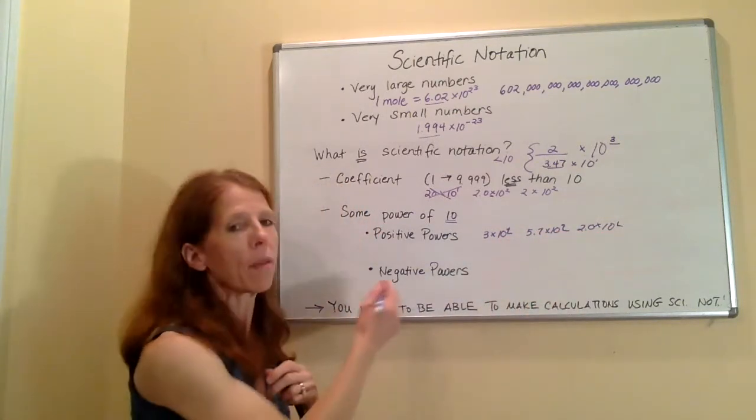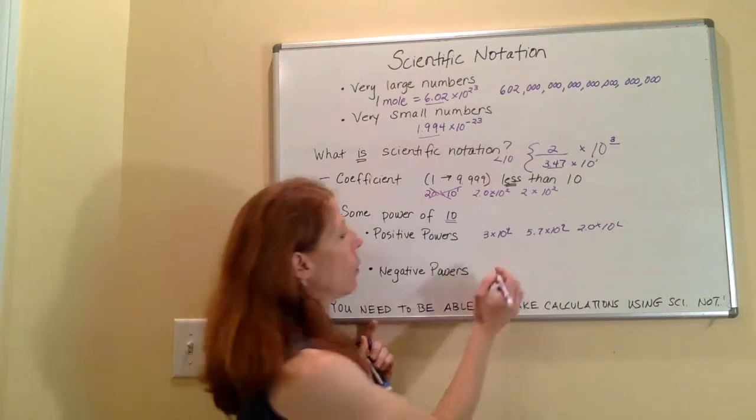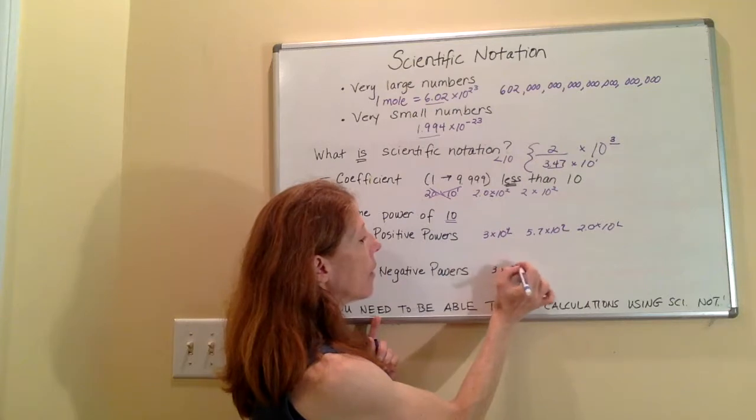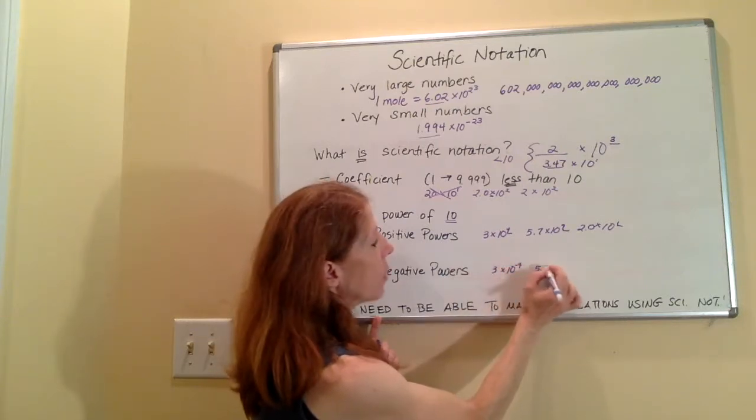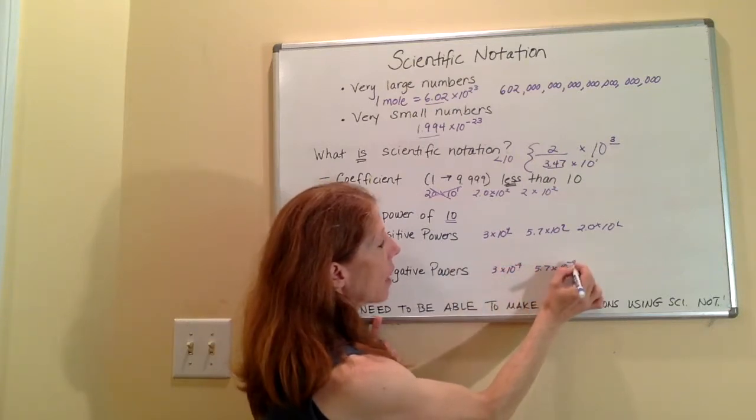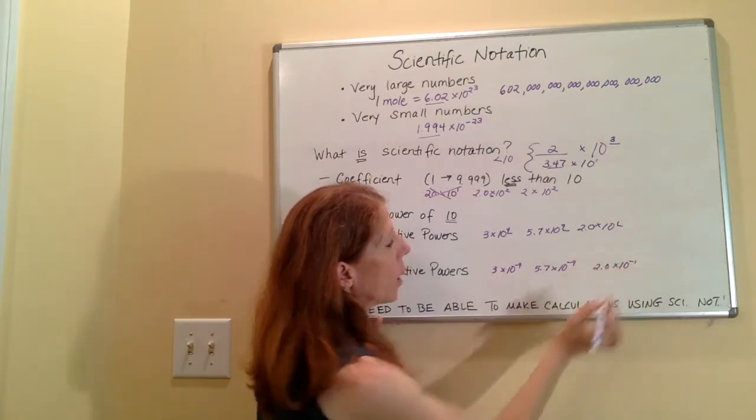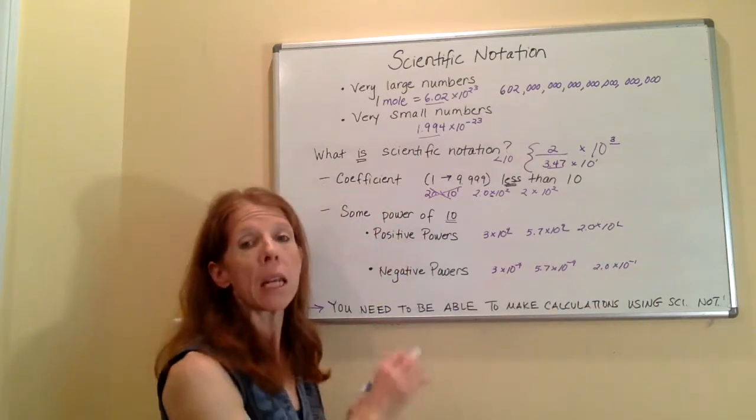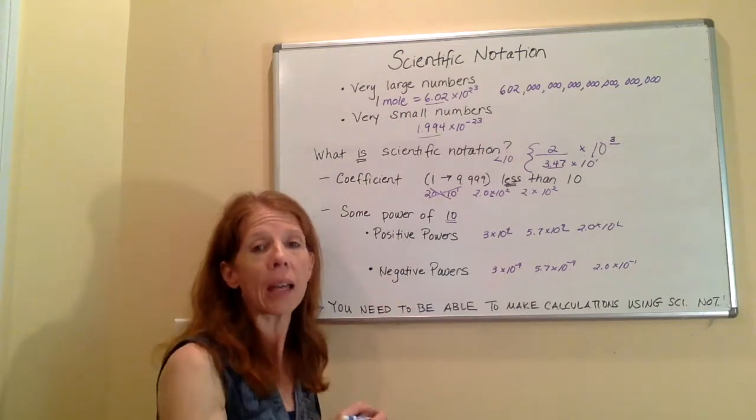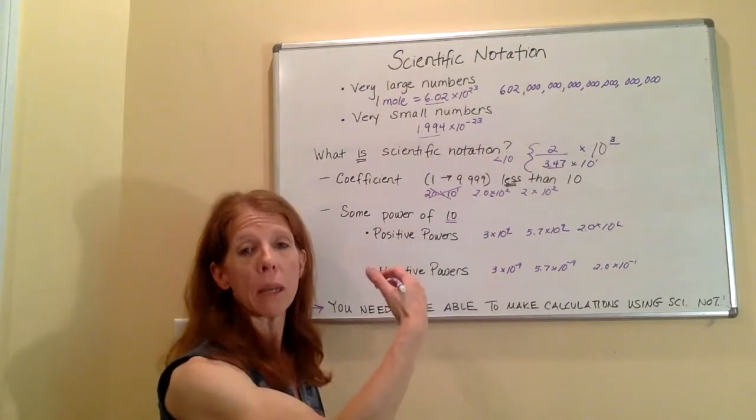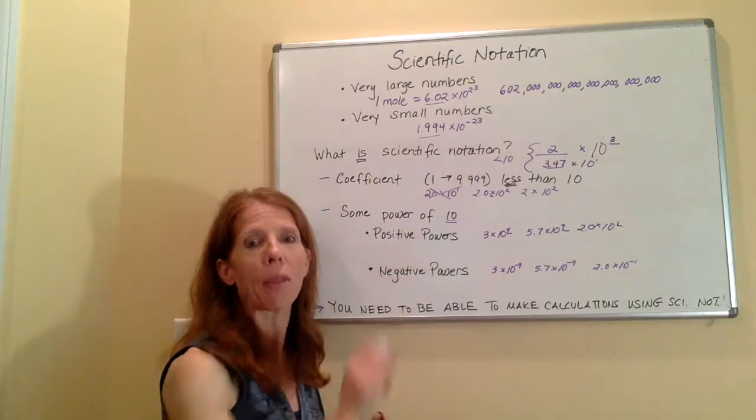We can also have negative powers of 10. We can have 3 times 10 to the negative fourth or 5.7 times 10 to the negative ninth or 2.0 times 10 to the negative one. They mean very different numbers. And we're going to get to that in our next video. What does it mean to have a positive power of 10? What does it mean to have a negative power of 10? So we're going to talk about that next.